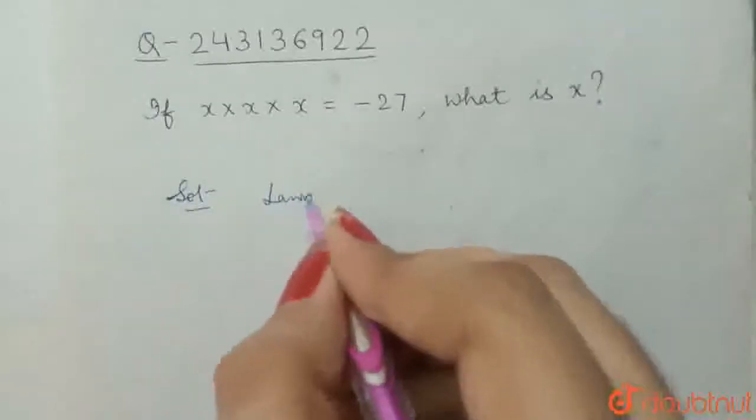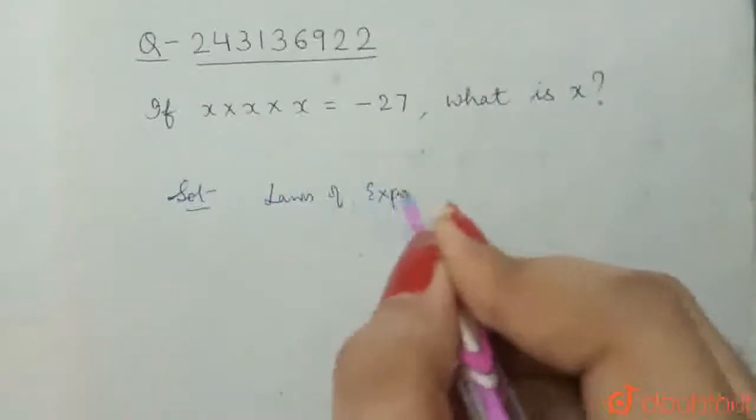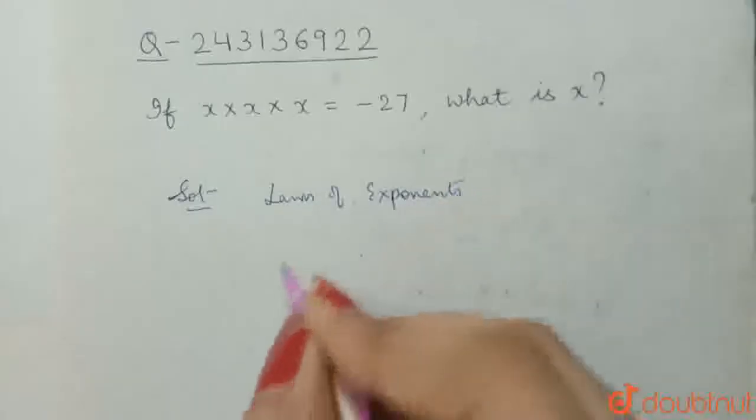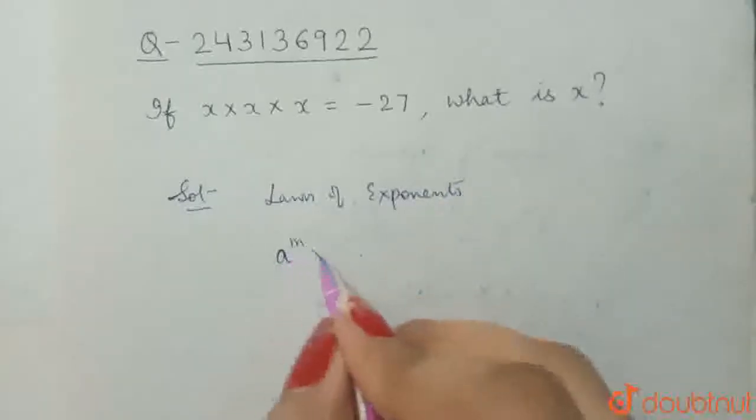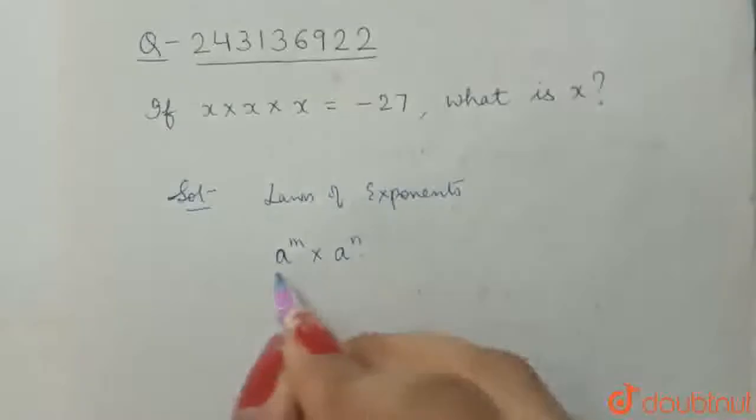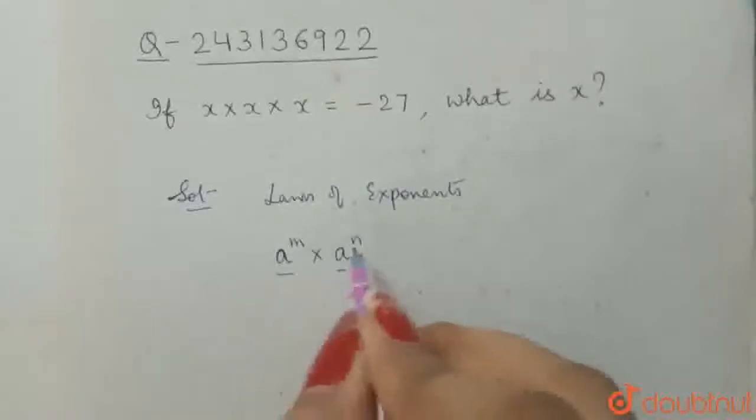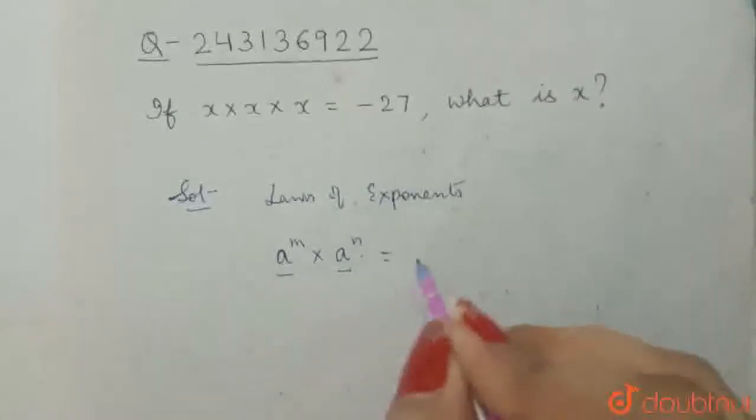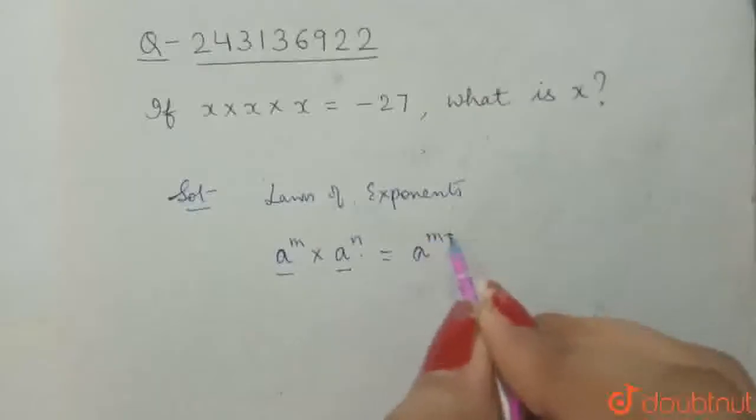by the laws of exponents, we know that a raised to power m times a raised to power n, that is the bases are same and the powers are different, then this expression becomes a raised to power m plus n,